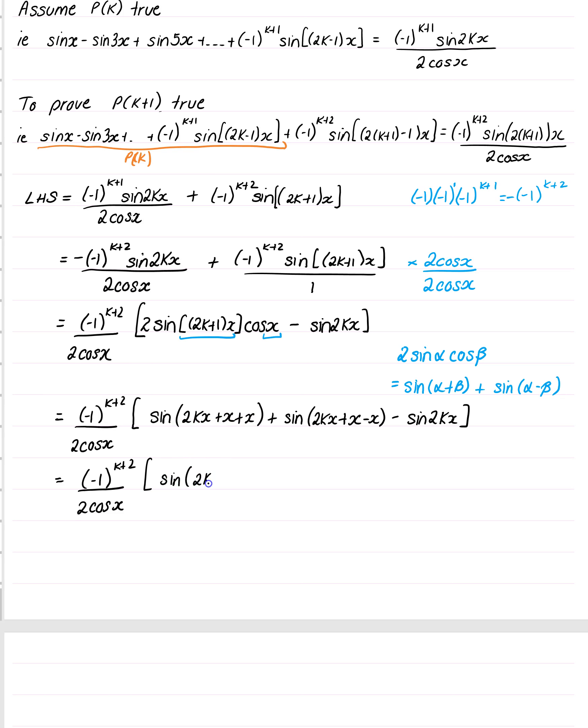Inside the bracket here, I've got 2kx. 1x plus another x is 2x. So over here, those x's cancel. I get sin 2kx minus sin 2kx. And so they cancel out.